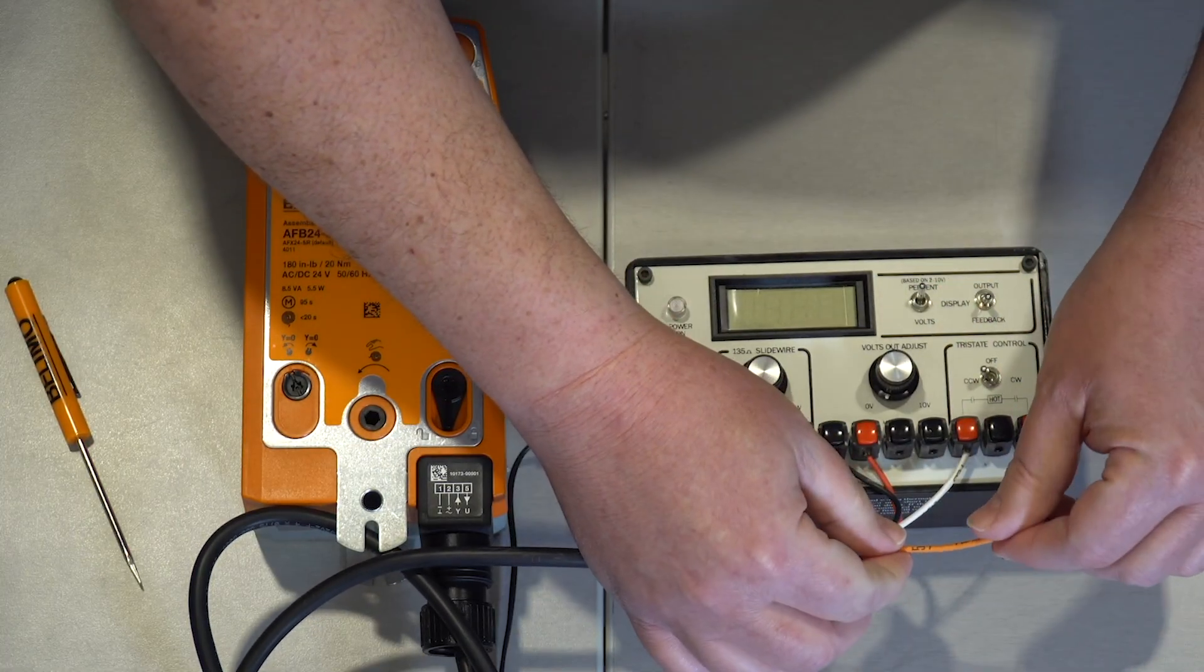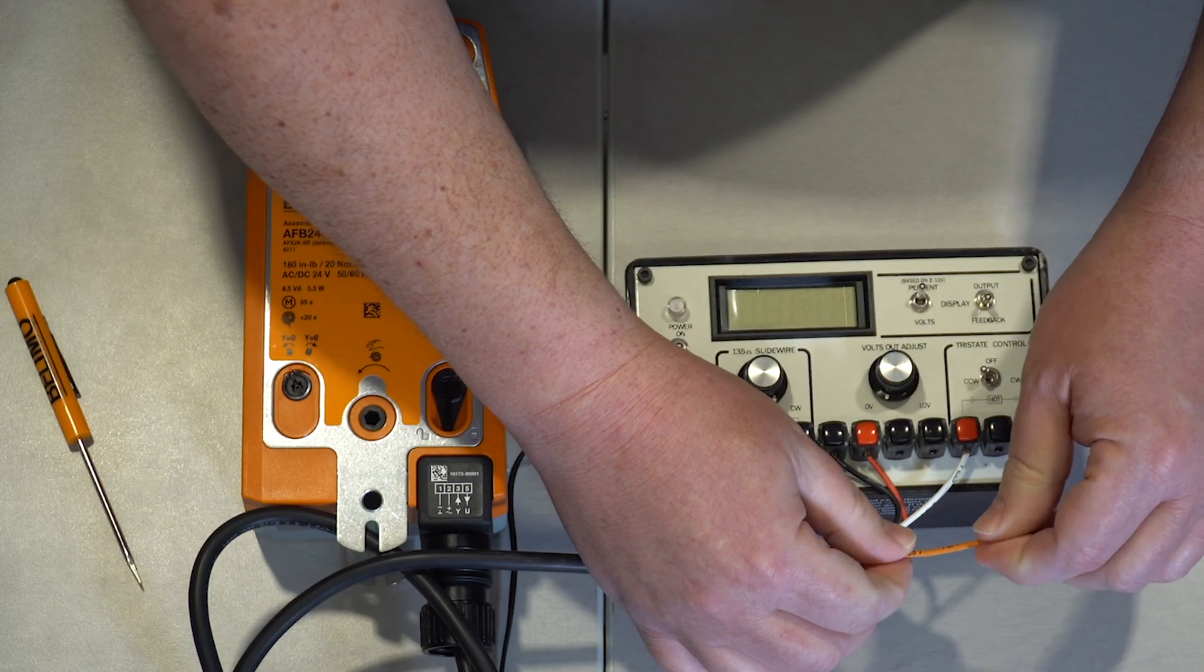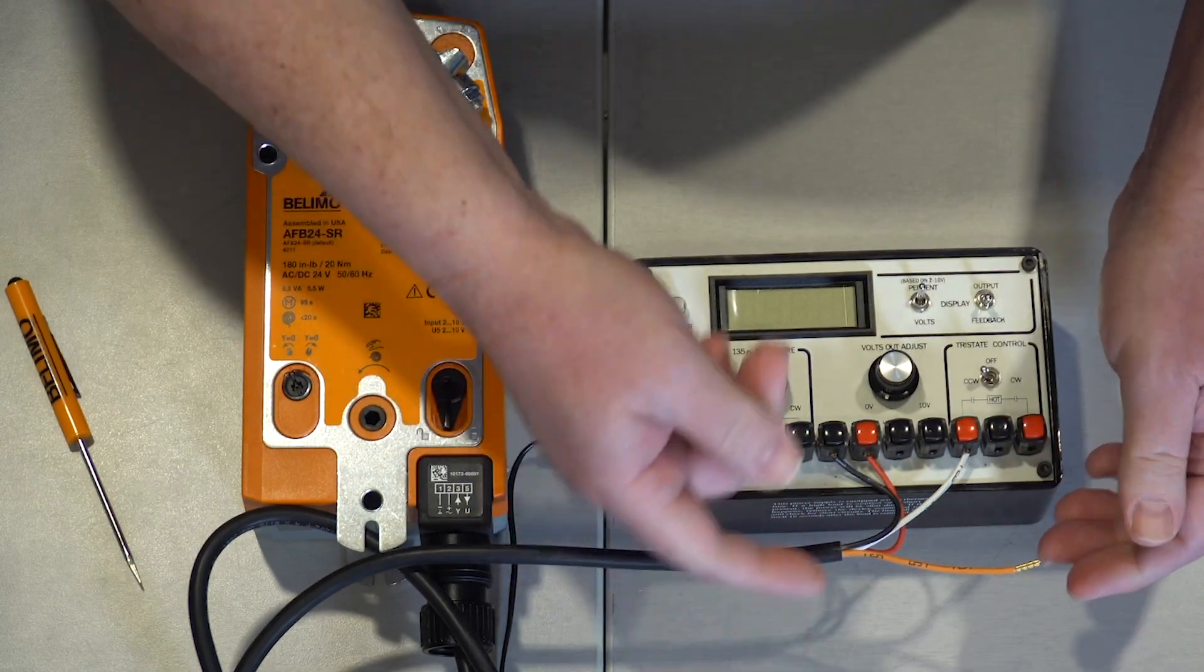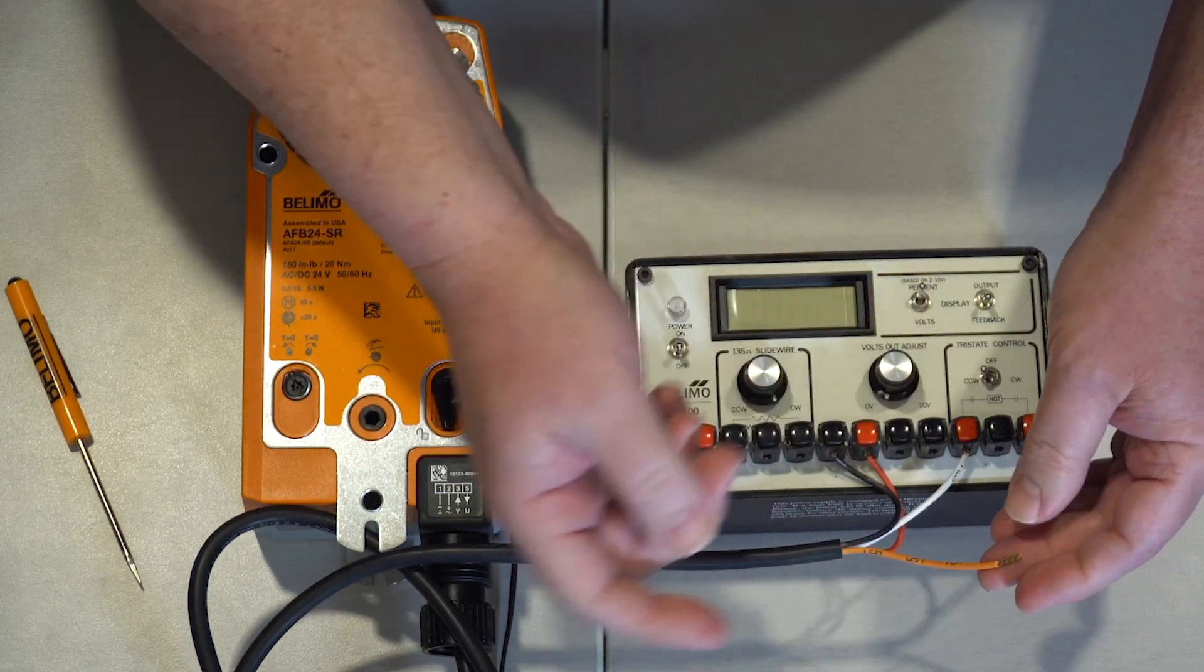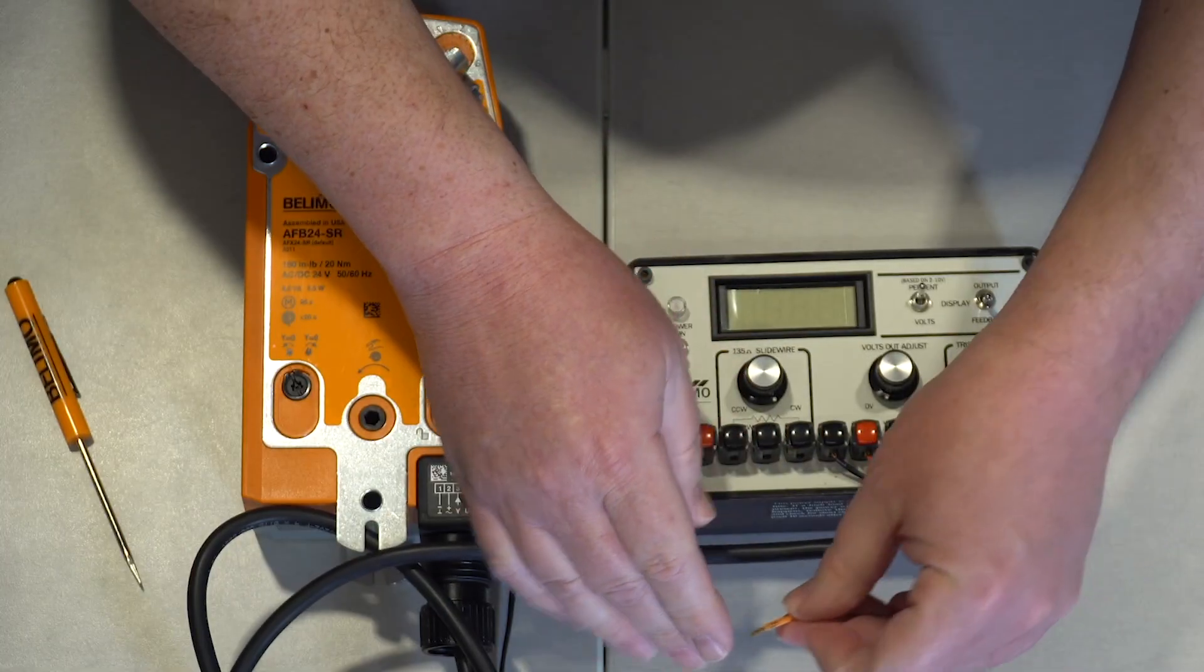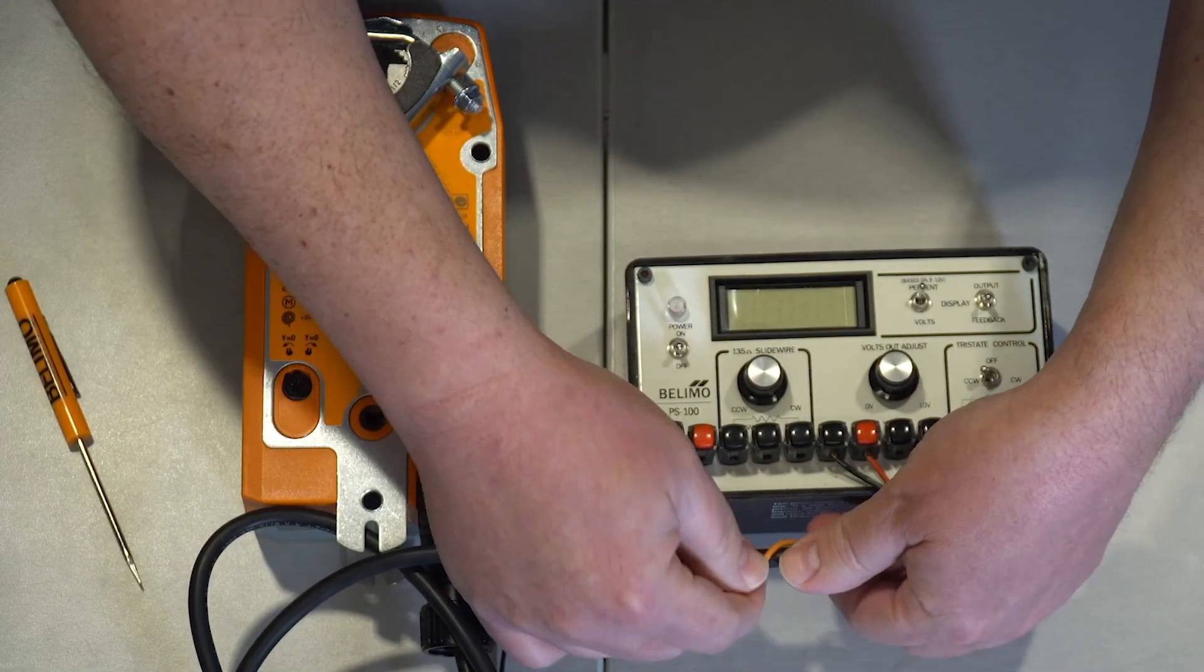Depending on your application, you may want to connect the feedback wire or leave it disconnected. The feedback wire is not required for the actuator to actually function. And we're going to tie that off.